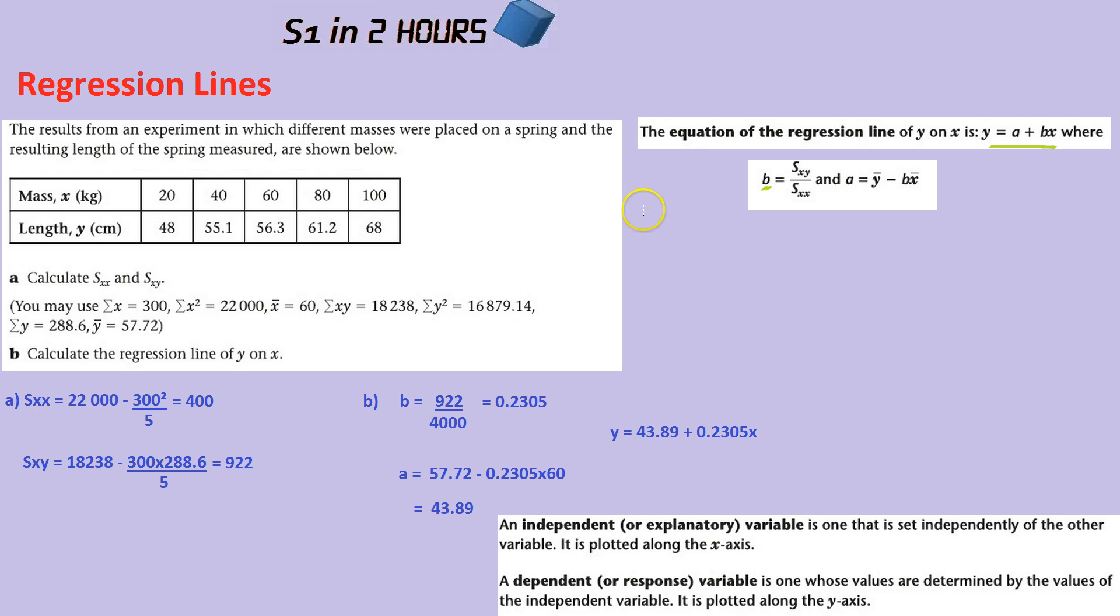Let's do an example. Results from an experiment in which different masses were placed on a spring and the resulting length of the spring measured are shown below. So here, by the way, the mass would be the independent variable, that's the thing causing the change, and the effect would be the changing length of the spring.